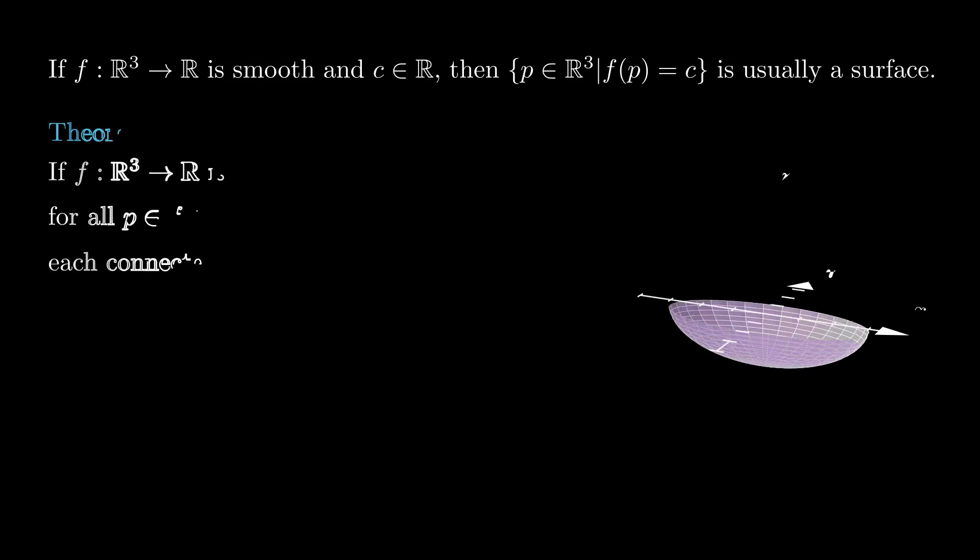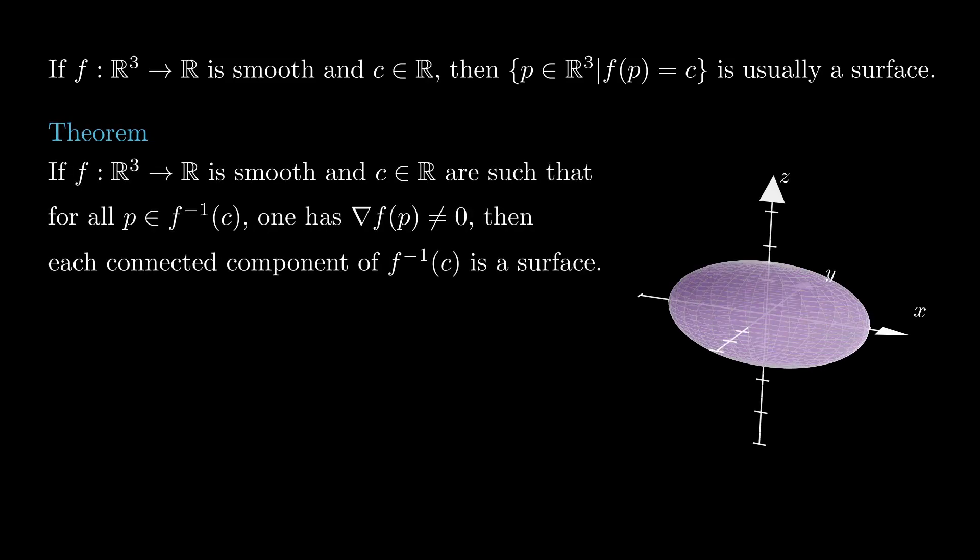This is part of a more general result that says, if we have a smooth function f of three variables, and the real number c is such that for any point p in the preimage of c, the gradient of f does not vanish at p,